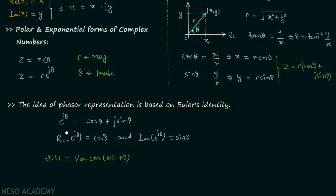Comparing Vm cos(ωt + θ) with Euler's identity, we can write V(t) as the real part of Vm times e to the power j(ωt + θ).